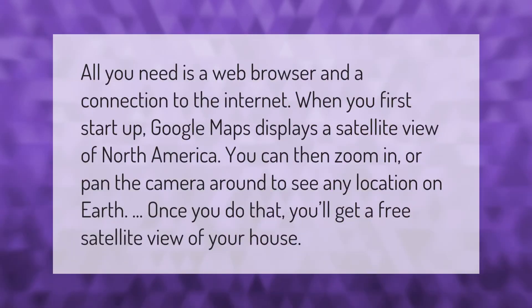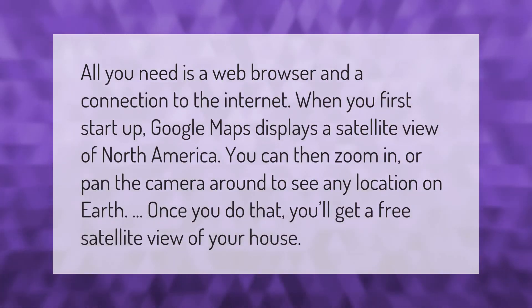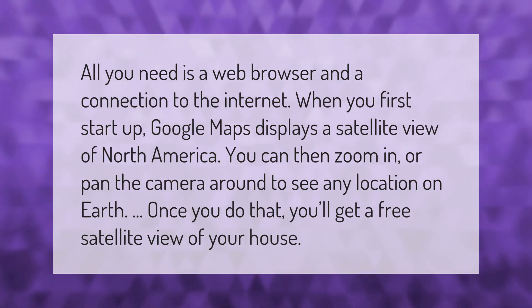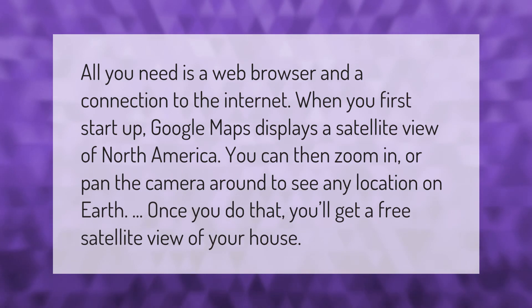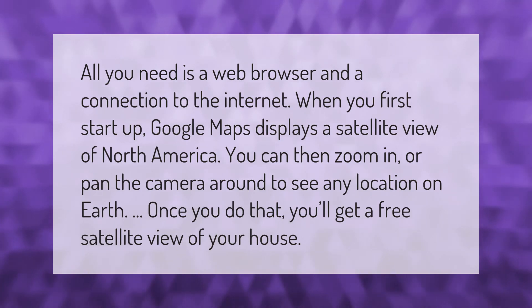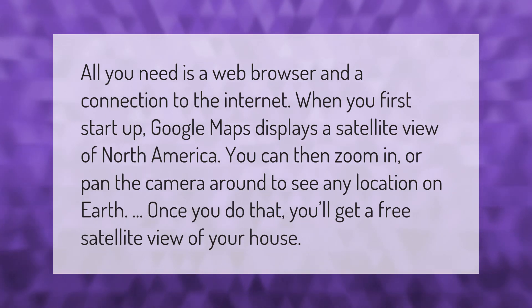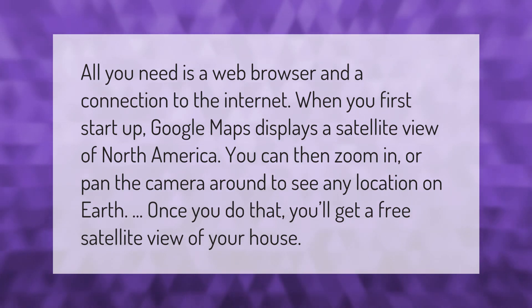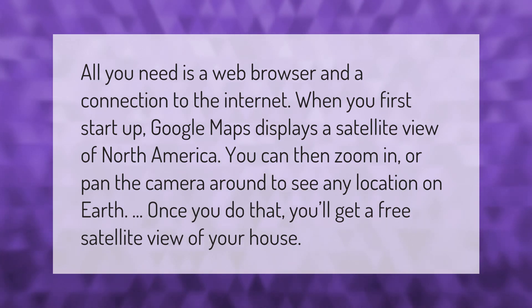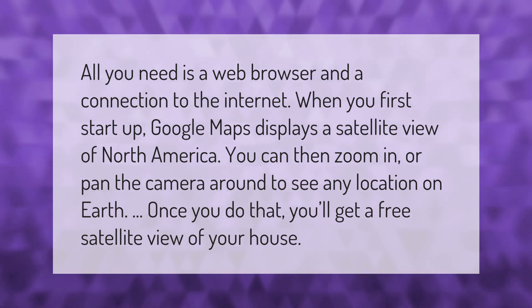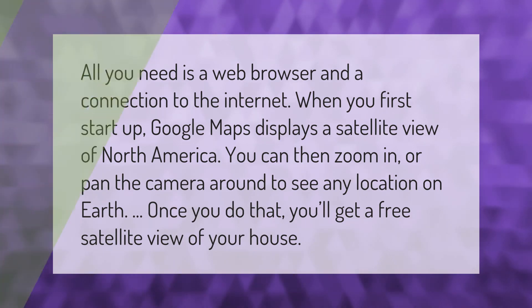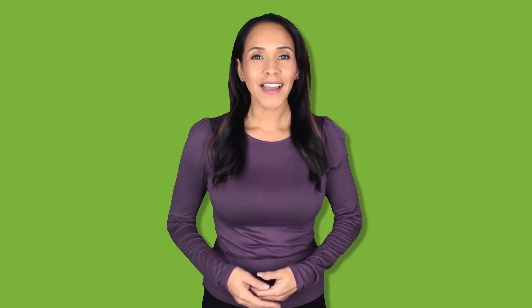All you need is a web browser and a connection to the internet. When you first start up Google Maps, it displays a satellite view of North America. You can then zoom in or pan the camera around to see any location on Earth, and get a free satellite view of your house. Thank you for watching — please subscribe and hit the bell notification.